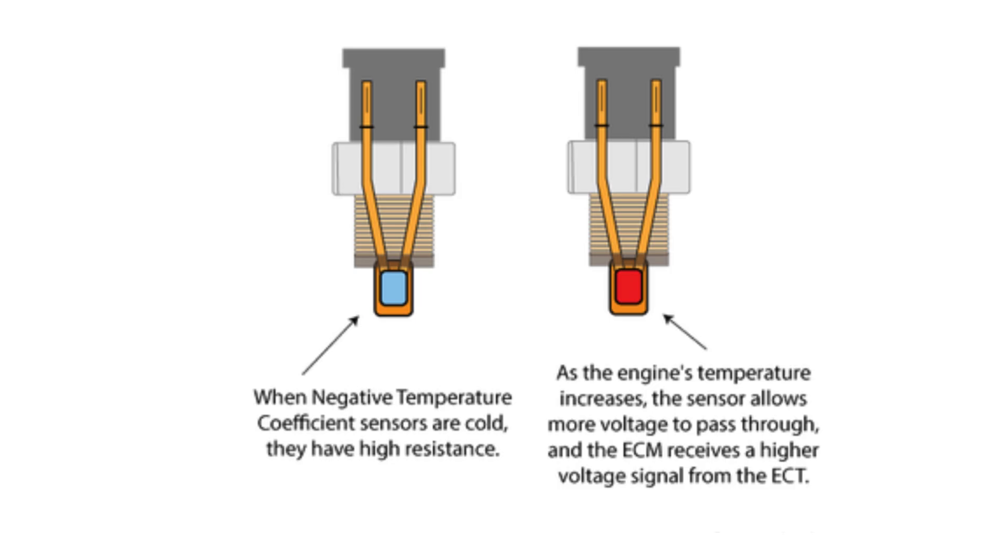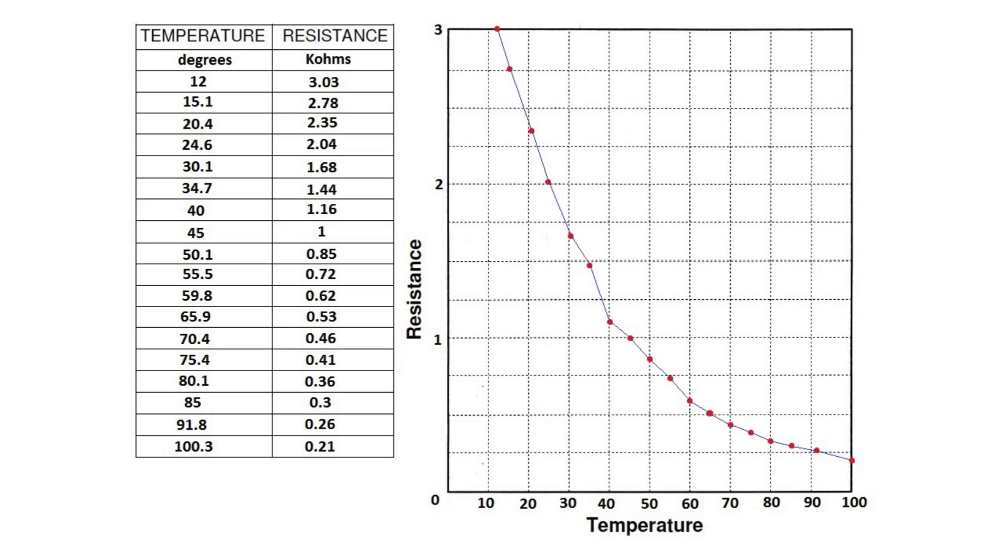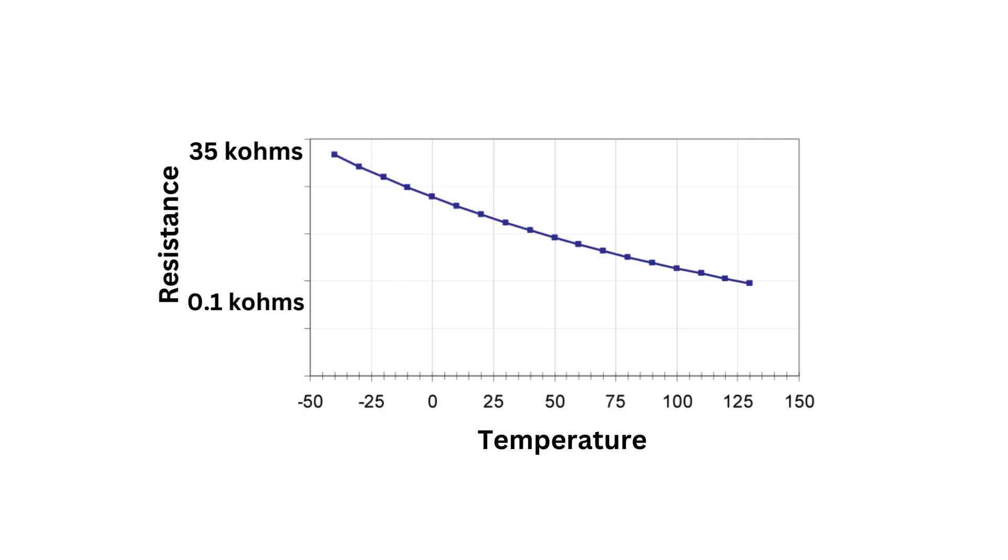Engine coolant temperature sensors are variable resistors with one or two wiring connections. The ECT sensors are calibrated for resistance at 0 and 100 degrees Celsius. Their resistance ranges from 100 ohms to 35,000 ohms, which varies based on the temperature.